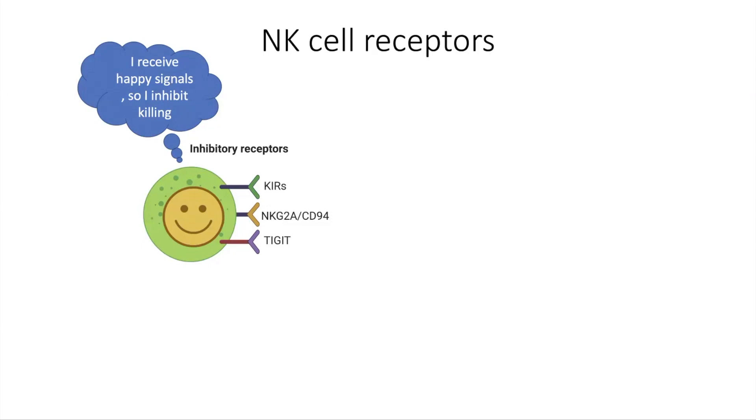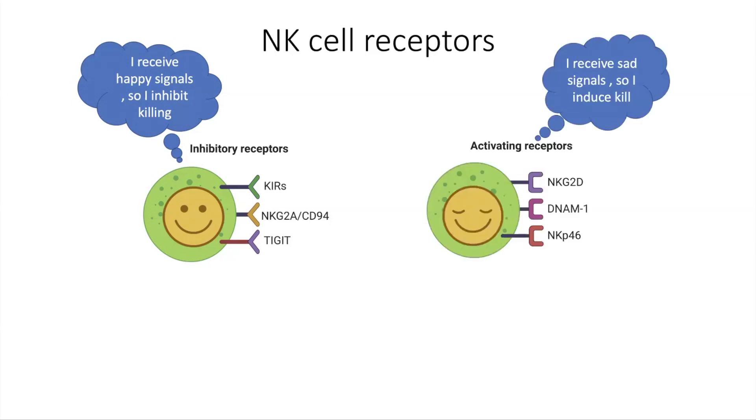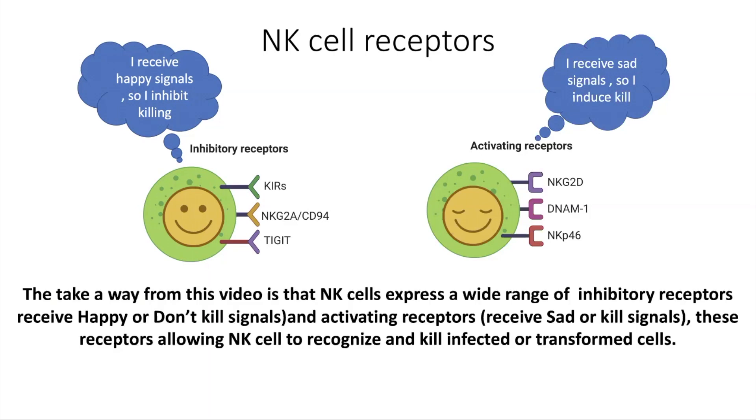On the other hand, sad signals are received by NK-cells that express activating receptors which include NKG2D, DNAM1, and NKP46 and other receptors. The takeaway from this video is that NK-cells express a wide range of inhibitory receptors